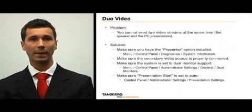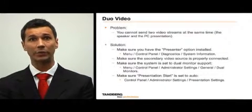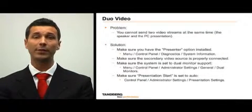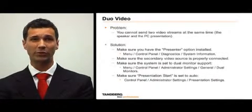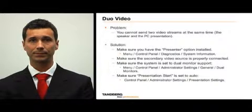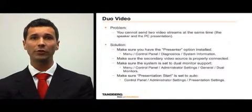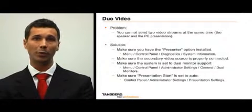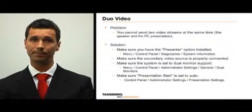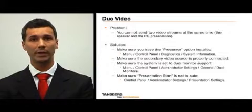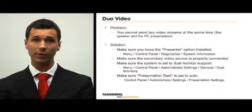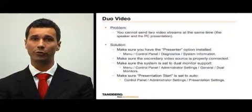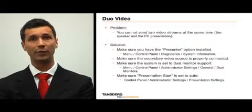Duo video streams. If you can't send two video streams at the same time — for example, if you cannot see both the speaker and the PC presentation — your first step is to make sure you have the presenter option installed on your system. Next, make sure the secondary video source, for example your PC, is properly connected to the end point. Finally, check and make sure the system is set to dual monitor support in the main menu. To do this, select the menu key on your remote control, choose presentation, and select duo video.